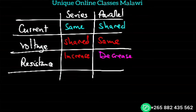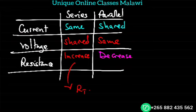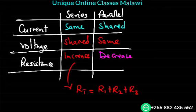So the total resistance in series — the total resistance is resistance number one plus resistance number two plus resistance number three, and so on. This gives us the total resistance.